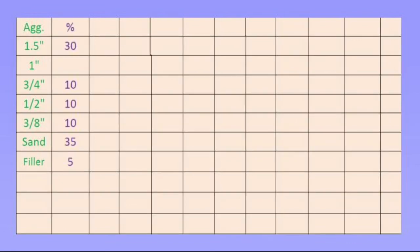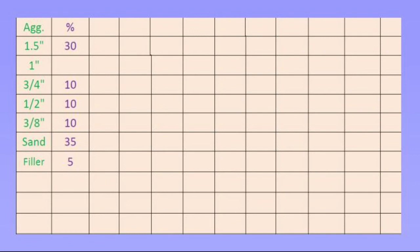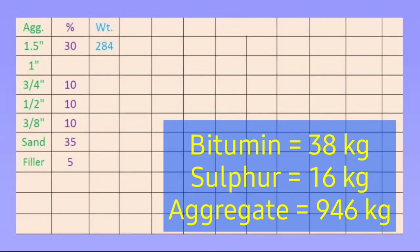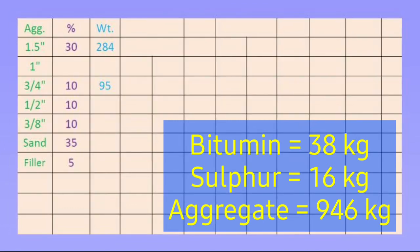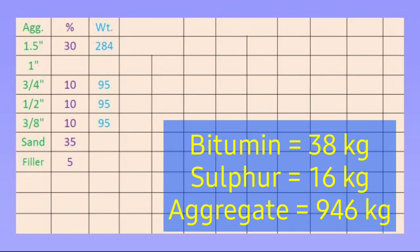Write aggregate size in one column and the percent used for each aggregate in another column. Now calculate the weights of aggregates one by one. For example, 1.5-inch is used as 30%, so calculate 30% of 946 kg (since total aggregate is 946 kg after subtracting bitumen weight), which gives a value of 284 kg. Similarly, calculate the weight for 3/4-inch aggregate, half-inch aggregate, 3/8-inch aggregate, sand, and filler.